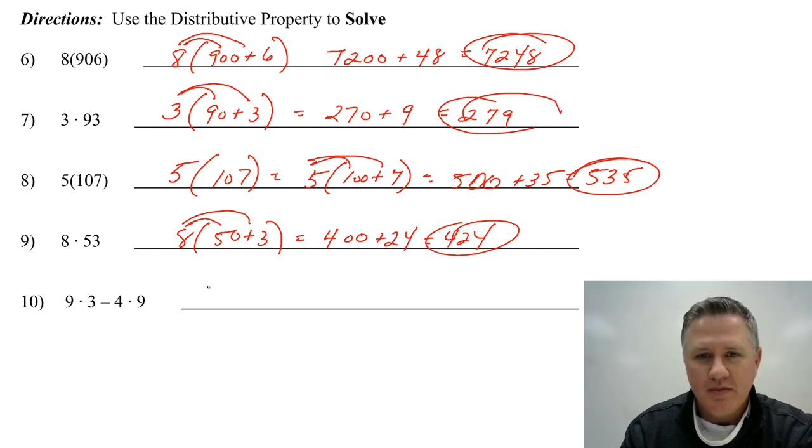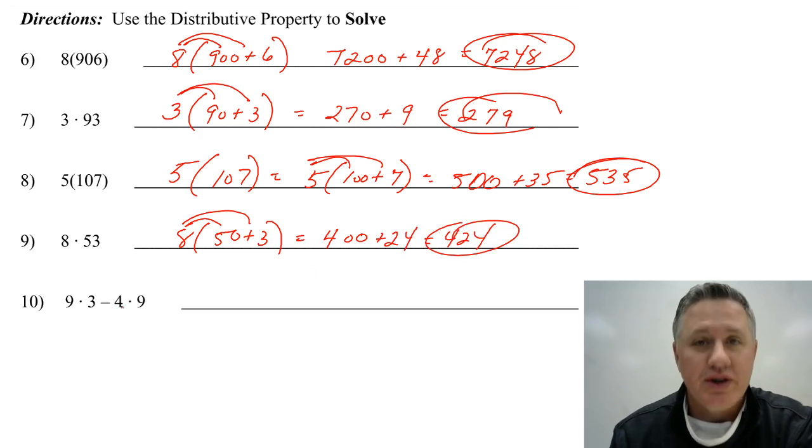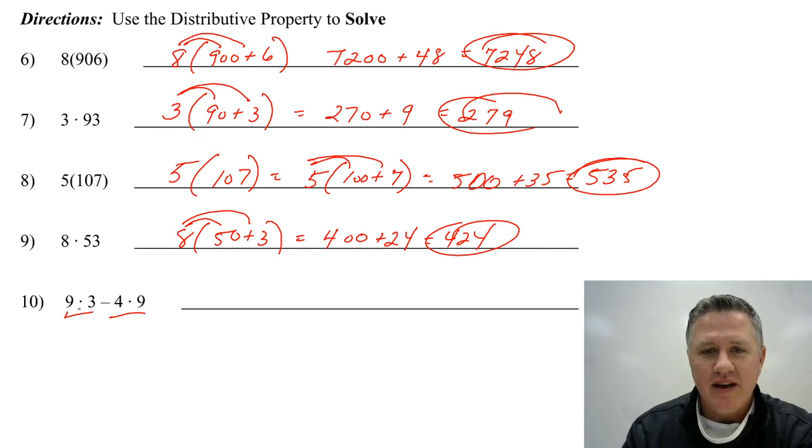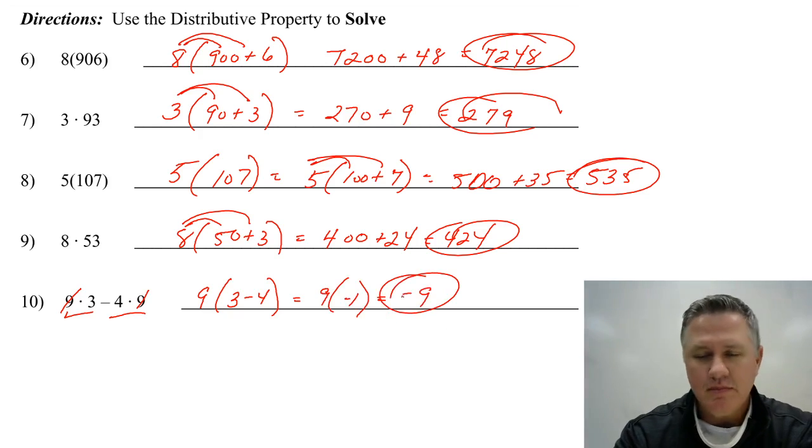All right. Next one. I've got... Ooh, this is a different question, right? So this is where I say, what does this and this have in common? It's the 9s. So pull out the 9. What do you have left? 3 minus 4. Do 3 minus 4. Don't redistribute. That'd be silly. And you get negative 9.